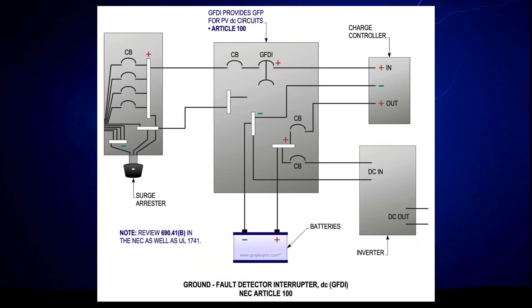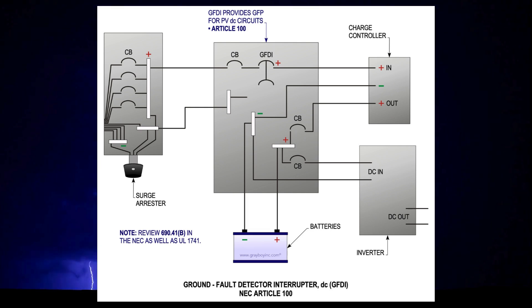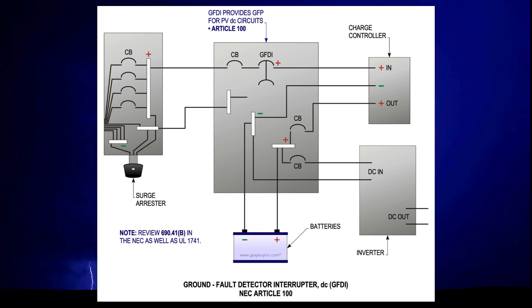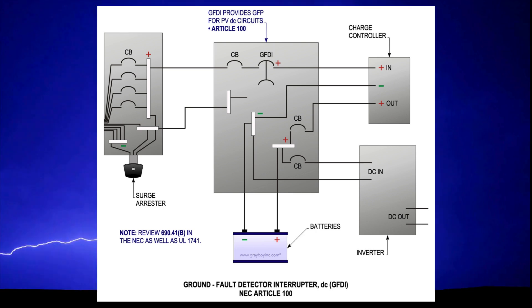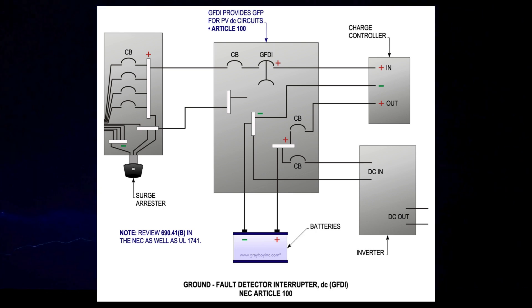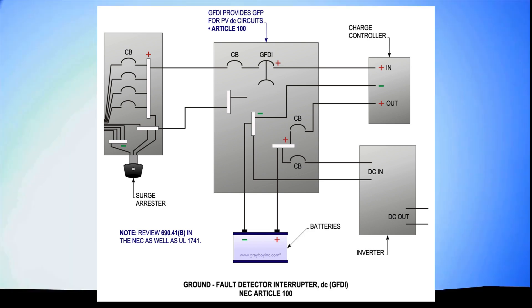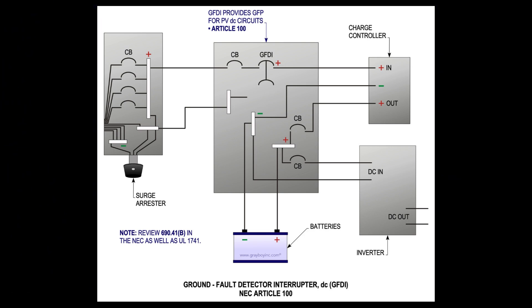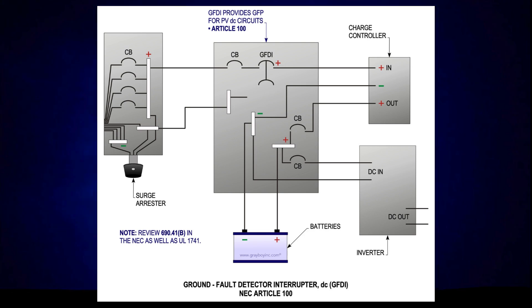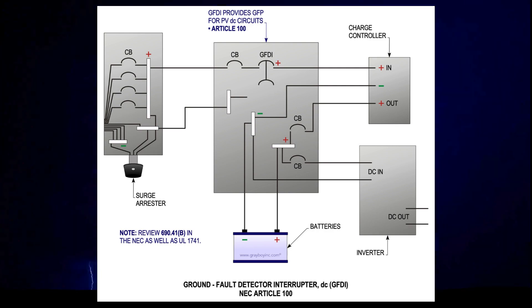A new definition has been added to address the acronym GFDI that is used in 690.41(b) but is not defined. This new definition distinguishes that a GFDI differs from a GFCI and is a device specifically applicable to photovoltaic, or PV, systems.